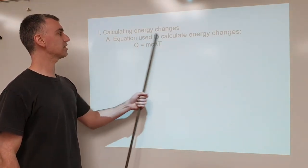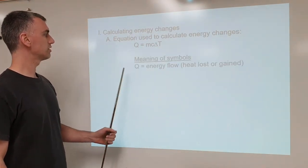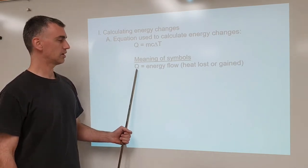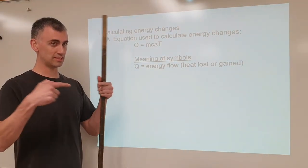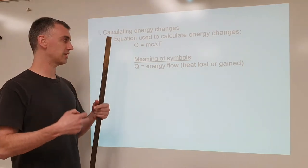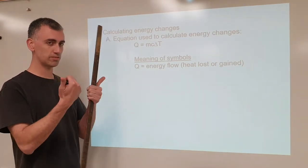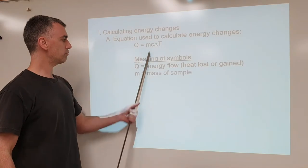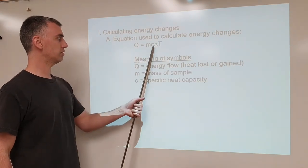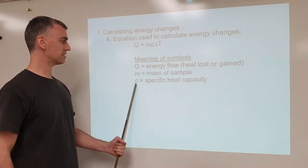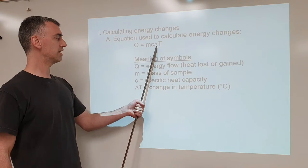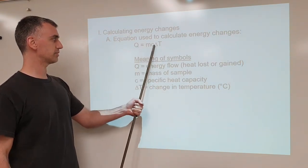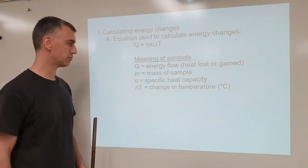Q represents energy flow. A positive value means energy flows into the system — endothermic. A negative value means energy flows out of the system — exothermic. m represents the mass of a sample, c represents the specific heat capacity, and delta T means change in temperature, because delta means change and capital T is temperature.